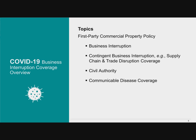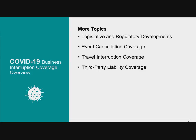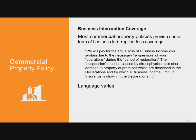We're going to start — probably half the discussion will be about first-party commercial property policies and the types of coverage they have. We're focusing in particular on business interruption, contingent business interruption, civil authority, and communicable disease coverage. We want to make sure we tell you what's going on in terms of state and federal legislative developments, and we'll briefly discuss third-party liability coverage issues.